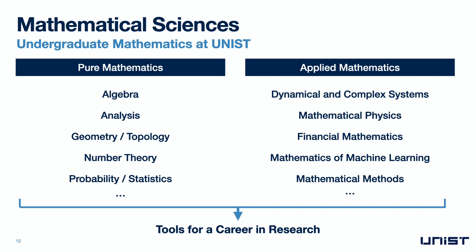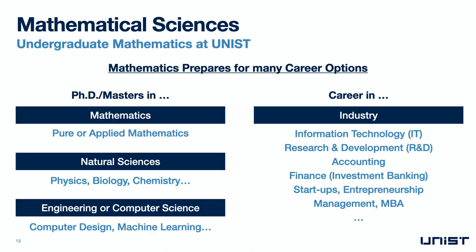Applied mathematics topics include mathematical physics, financial mathematics, mathematical biology, mathematics of machine learning, and various other mathematical methods. These mathematics undergraduate courses are designed to prepare you for a career in research — such as doing a PhD or master's degree in pure or applied mathematics. Because mathematics is so fundamental to all areas of natural sciences and engineering, the courses in our department also prepare you for a PhD or master's degree in physics, biology or chemistry, or in the engineering sciences such as computer-aided design or machine learning.